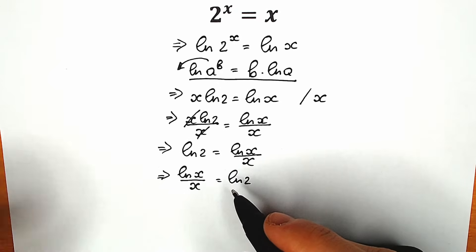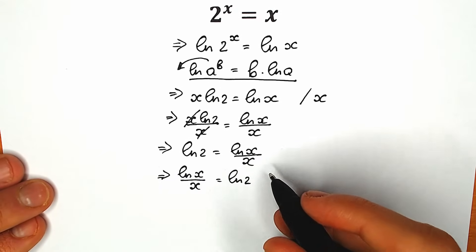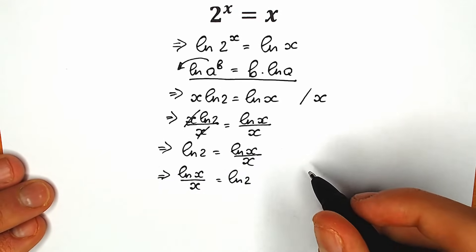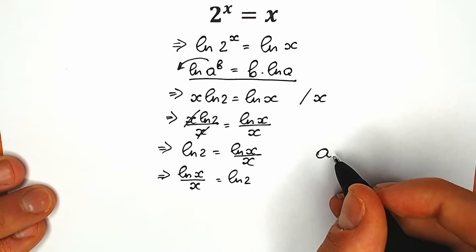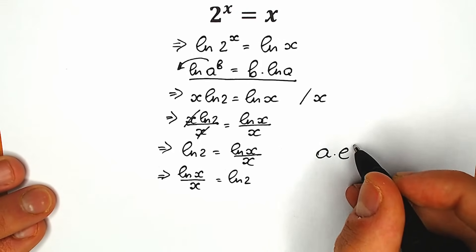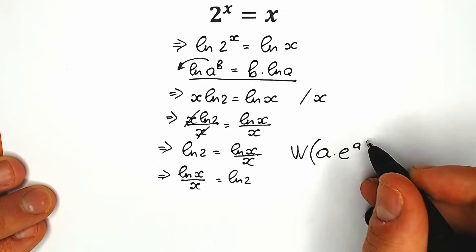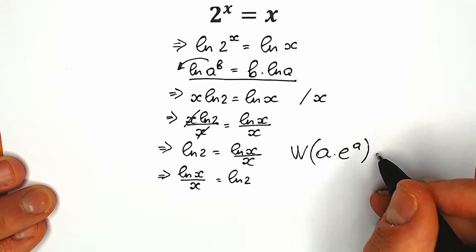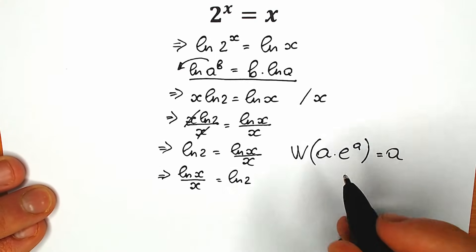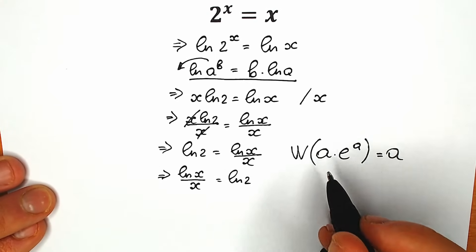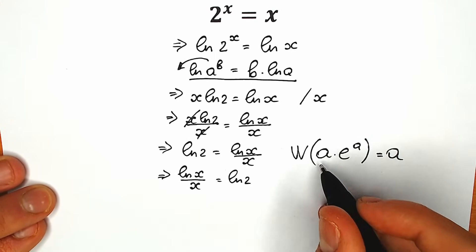The Lambert W function will help us solve this question and find our root. The key structure is: when we have an expression of the form a times e to the power a, and we apply the Lambert W function to it, we get back only a.